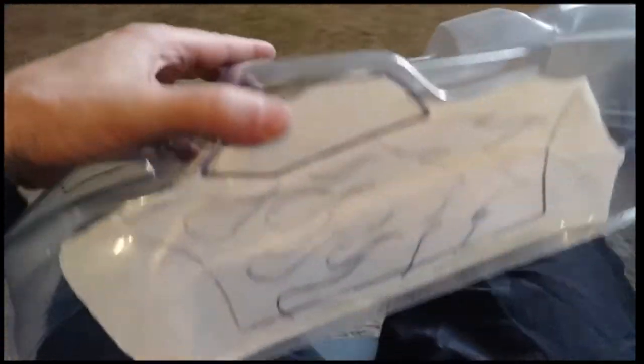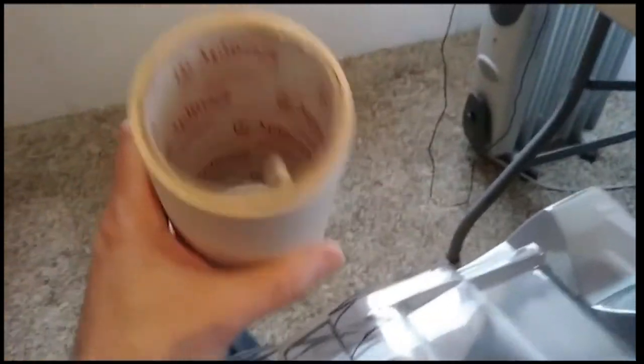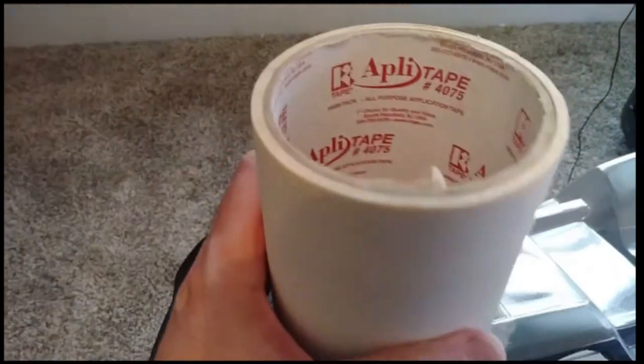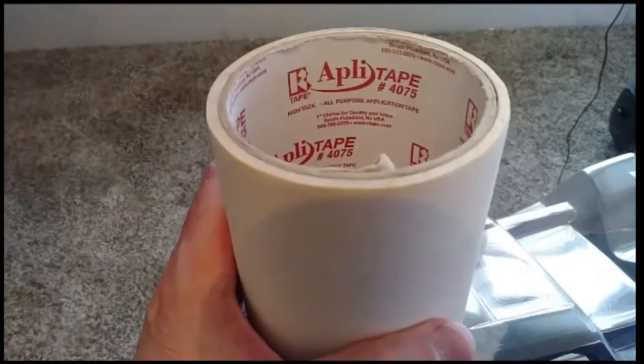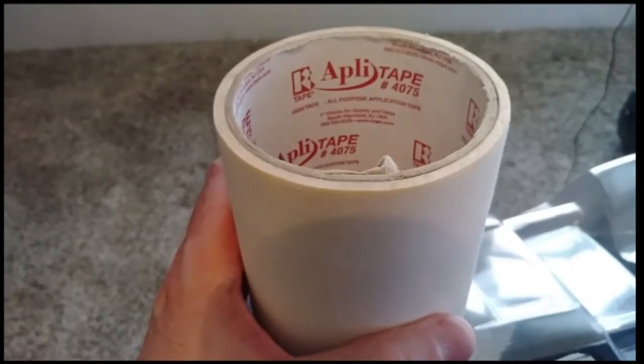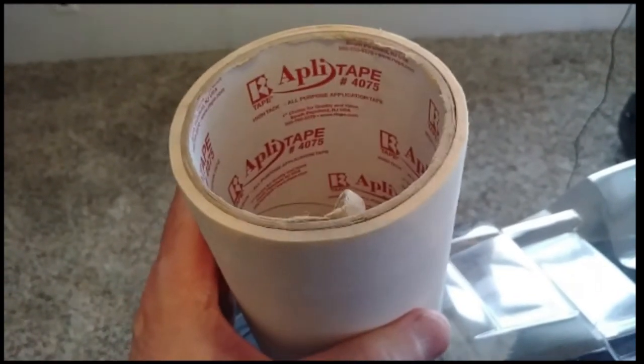Application R-tape is pretty inexpensive. I got it from a sign shop, but you can probably pick it up on Amazon. Applitape number 4075 is one that I found to be kind of the best as far as how much tack, transparency is good, and it works pretty good.